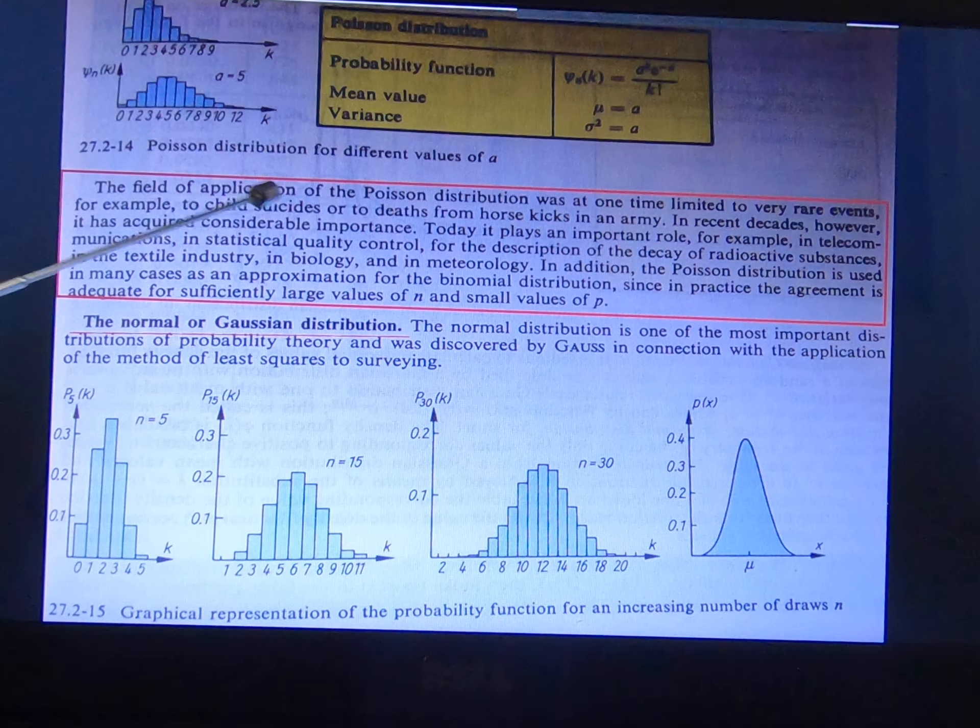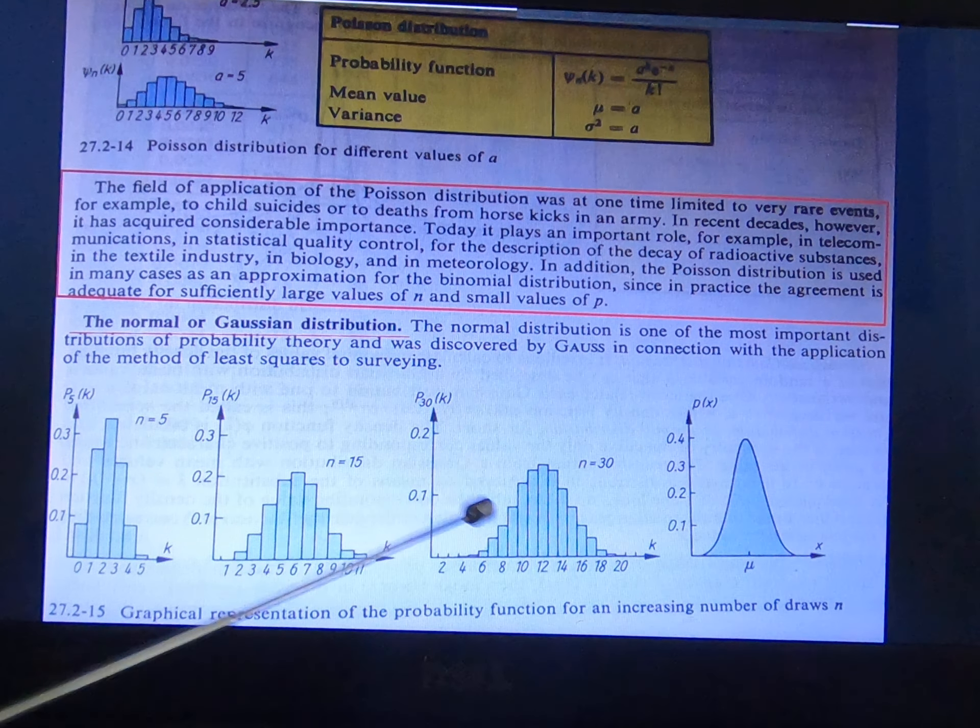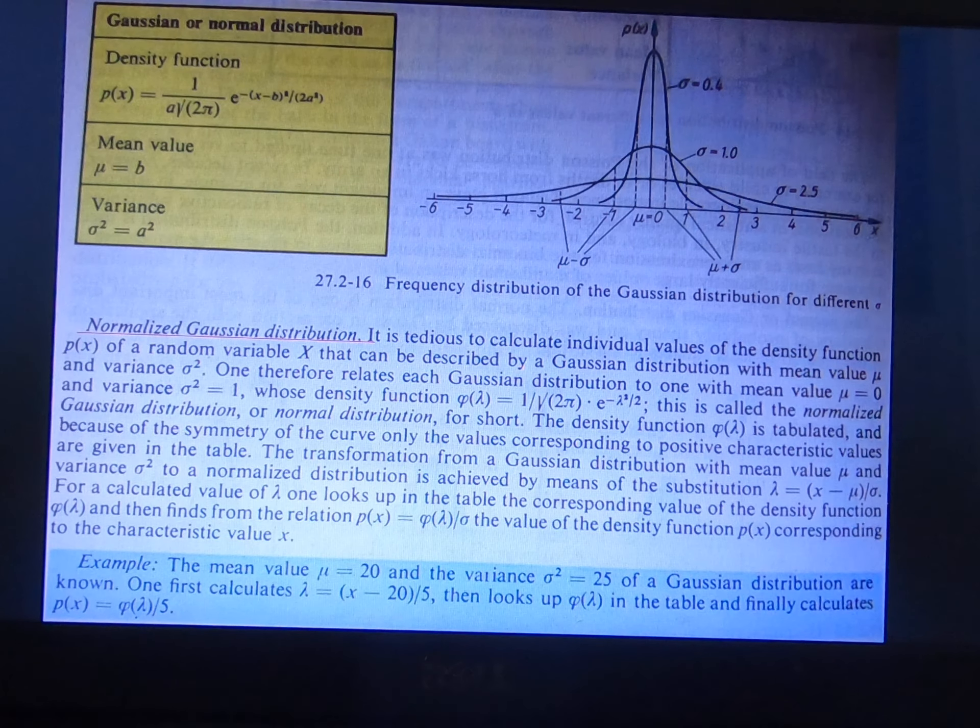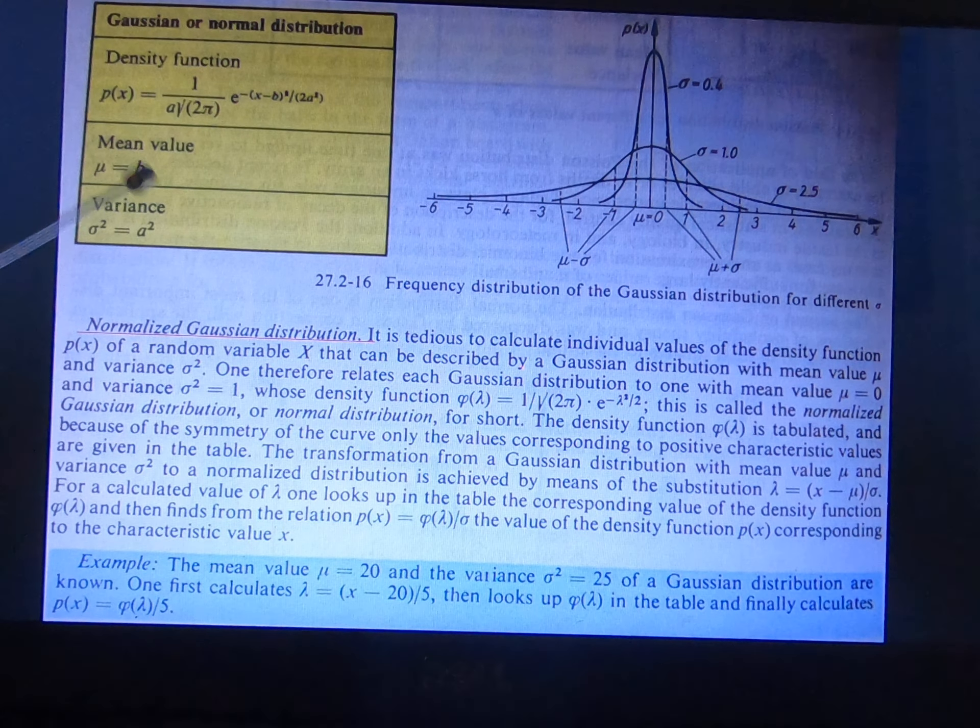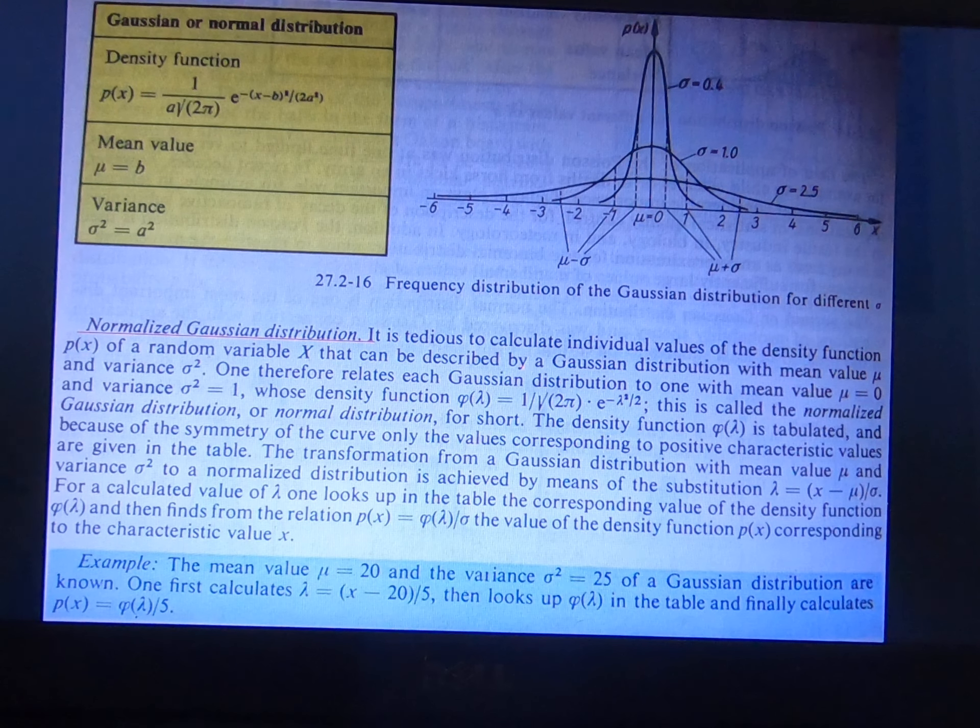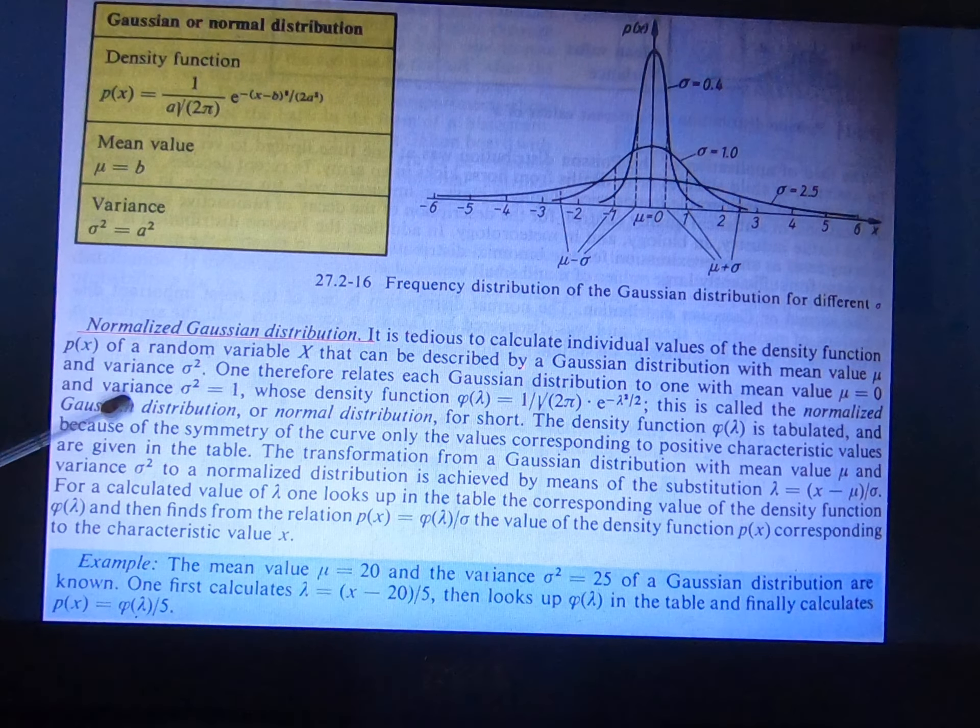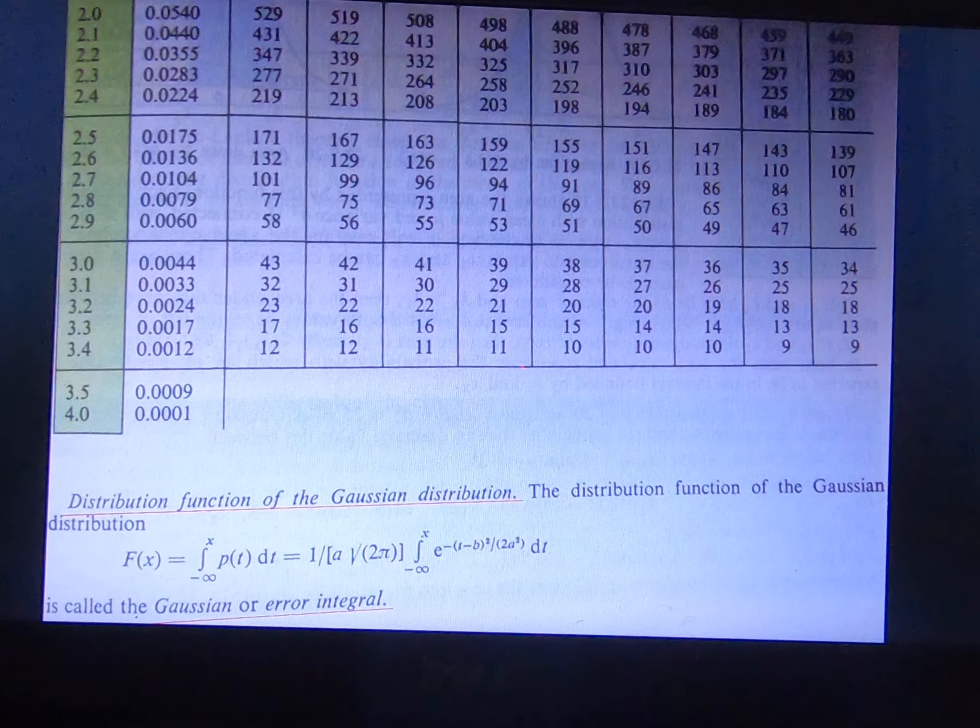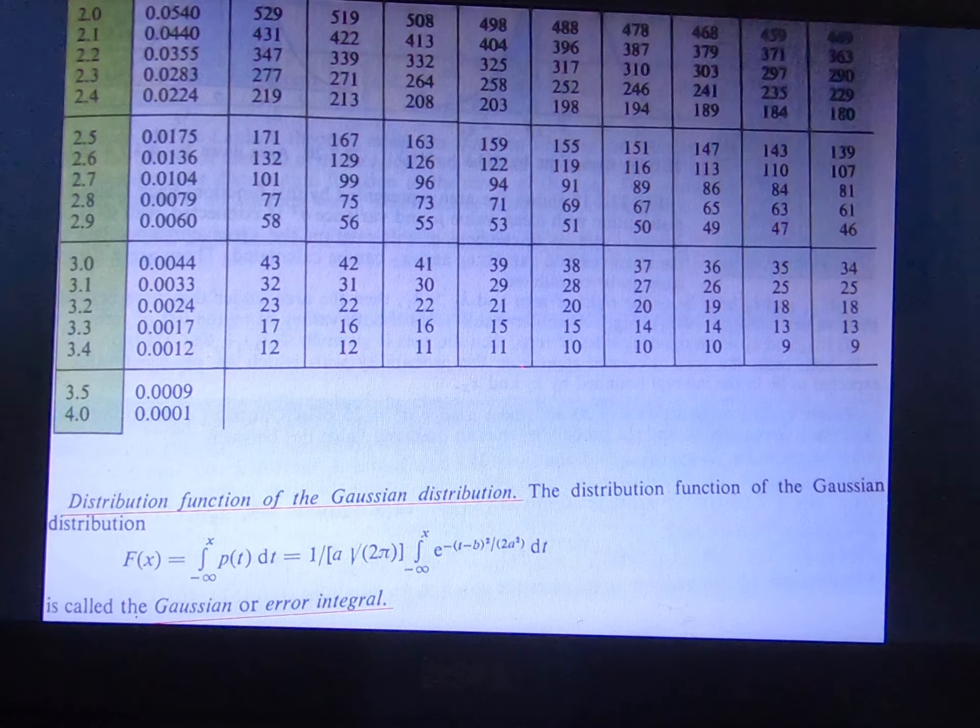The field of application of Poisson distribution law and normal and Gaussian distribution. Gaussian and normal distribution density function mean value equal to b, variation equal to a square. Normalize the Gaussian distribution. Distribute function of Gaussian distribution.